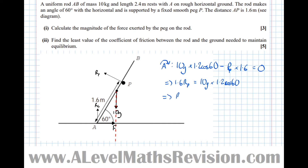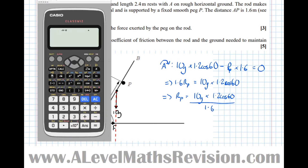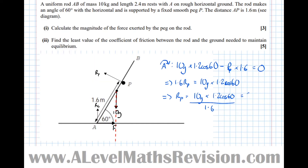Since the total moment sums to zero: 1.6 Rp = 10G × 1.2 cos 60, which means Rp = (10G × 1.2 cos 60) / 1.6. Putting that into the calculator — 10 × 9.8 × 1.2 × cos 60 ÷ 1.6 — gives 147/4, which equals 36.75 newtons. That's part one complete.